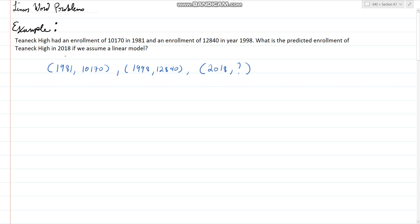The way I like to solve these problems is to set the first year that they give me as year zero. I find that the arithmetic really simplifies if I do this. That would make 1998 as year 17 and 2018 as year 37.